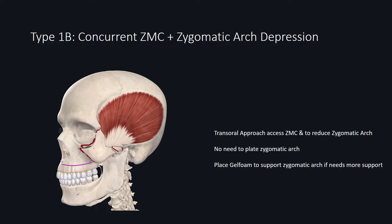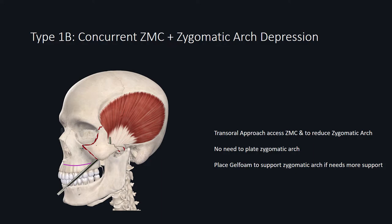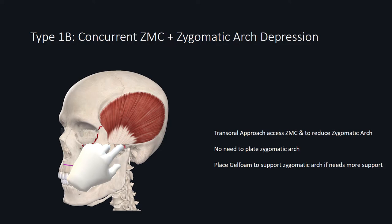In Type 1b, you have a concurrent ZMC fracture with displaced malar eminence and a zygomatic arch fracture that is also displaced. Because the ZMC fracture requires a transoral approach, the same transoral approach can also be used to elevate the depressed zygomatic arch fracture. Once properly elevated, you should be able to sweep the elevator back and forth. You do not need to plate the zygomatic arch; however, upon palpation, if there is excess movement or tendency for the arch segment to be displaced, you can place a gel foam deep to the zygomatic arch and it will fuse in that location.